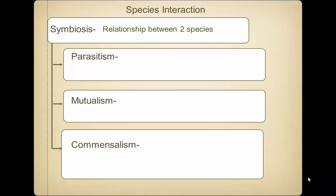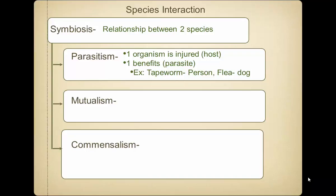Sometimes it feeds off of their hosts. A parasite is an organism that lives in or on a host, and it actually harms them — injures them in some way. The other organism, the parasite, benefits. So in parasitism, one organism benefits — the parasite — but the other is harmed.